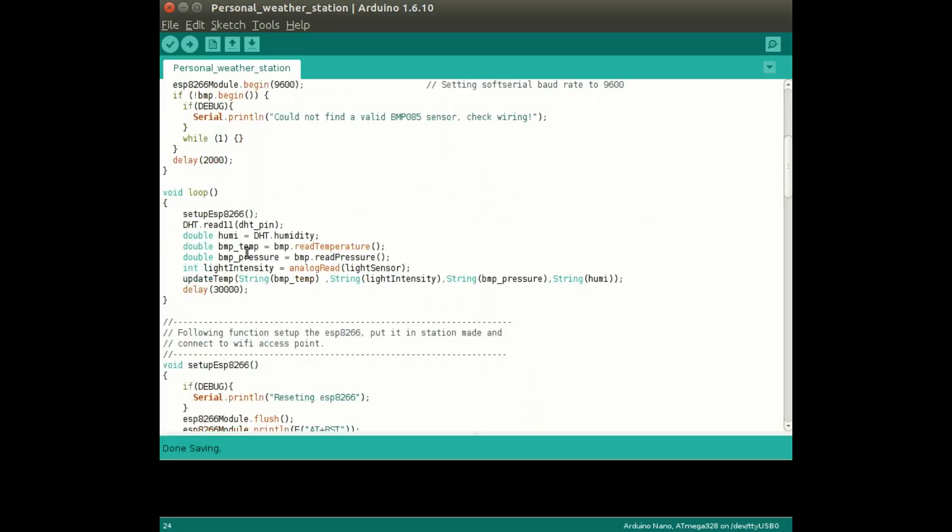And in the loop part, this is the code that gets repeatedly executed. First statement is setup ESP8266 - this function sets the ESP8266 in the station mode and connects to a WiFi access point. This statement accesses the value of our sensors and this function uploads the data to ThingSpeak.com.